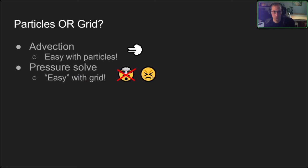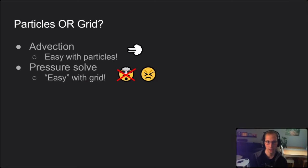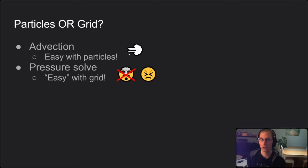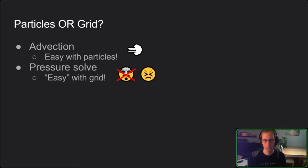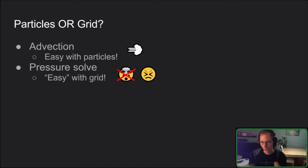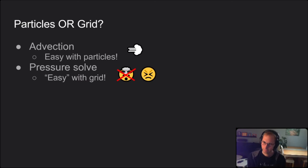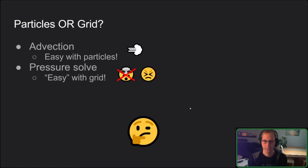So what should we use — particles or grids? There's a clear trade-off. Advection is trivial with particles: just move them. With a grid you need to blur it out and get a lot of error, so advection is hard. On the other hand, the pressure solve is relatively easy with a grid because you have a defined space and can easily compute derivatives. With particles it's hard — you need to look at your neighbors, and their positions keep changing.